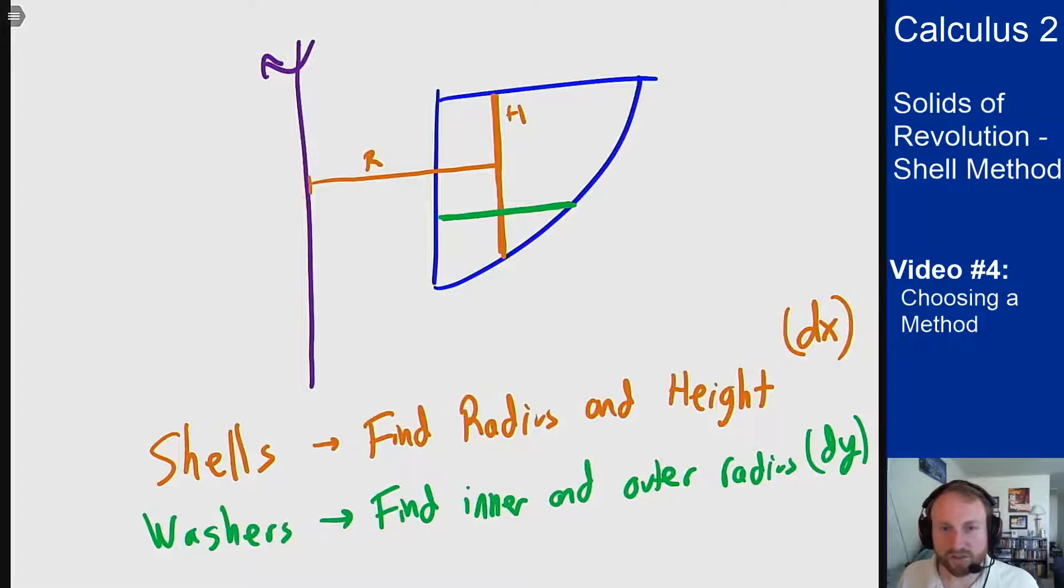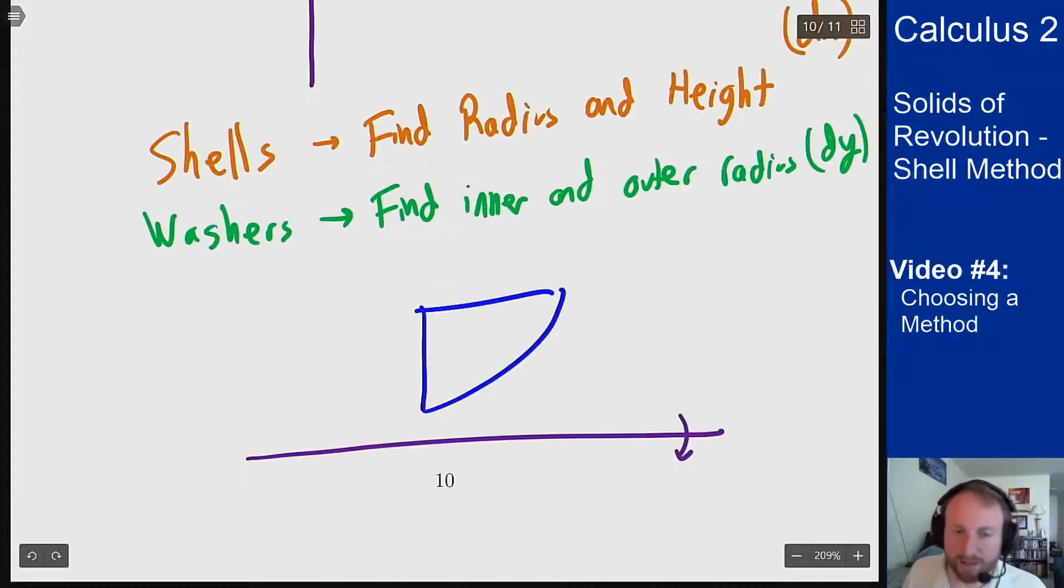For the other axis of rotation the roles are sort of reversed. If I have a horizontal axis of rotation then shells require horizontal segments and a dy integral and washers are vertical segments and a dx integral.